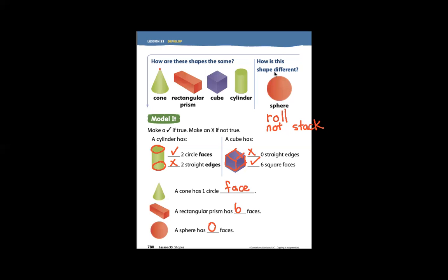One way you can say that these shapes are all the same is that they are all 3D shapes or three-dimensional shapes. They are all fat shapes. They are not flat shapes.